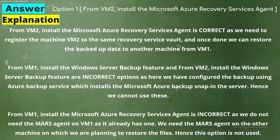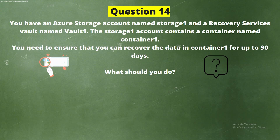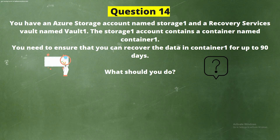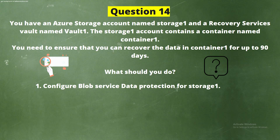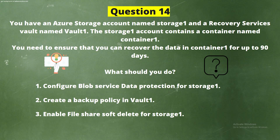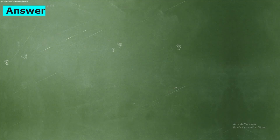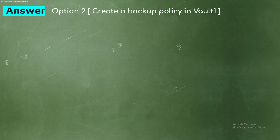Next question: You have an Azure storage account named Storage1 and a Recovery Services Vault named Vault1. Storage1 contains a container named Container1. You need to ensure you can recover the data in Container1 for up to 90 days. Options: option 1, configure blob service data protection for Storage1; option 2, create a backup policy in Vault1; option 3, enable file share soft delete for Storage1; option 4, create a stored access policy for Container1. The correct answer is option 2: create a backup policy in Vault1.